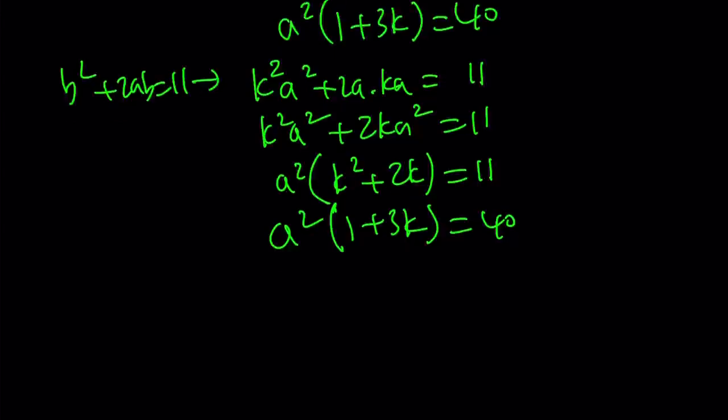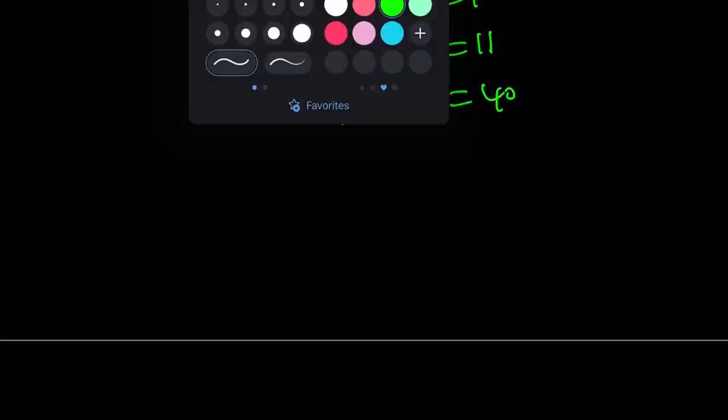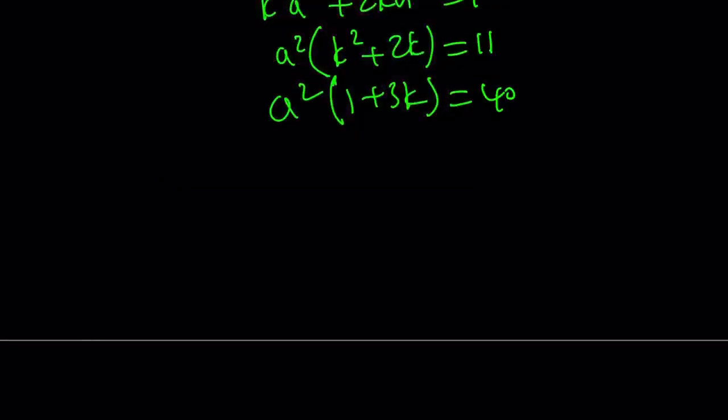Now we got two variables, a and k instead of a and b. But this is nice because you can divide both equations and get rid of a squared and end up with a single variable. If you divide these, you get k squared plus 2k divided by 1 plus 3k equals 11 over 40. Let's cross multiply.